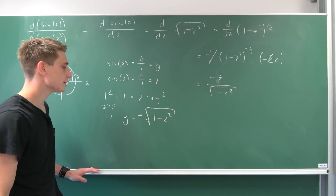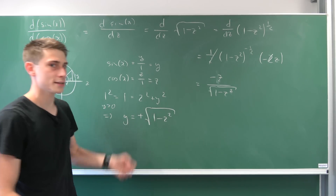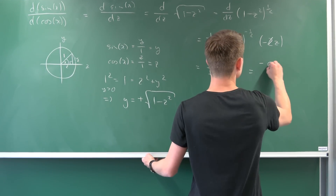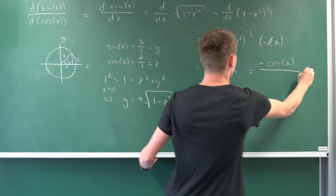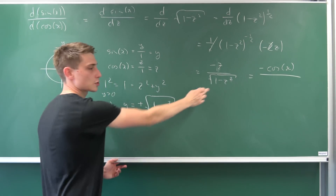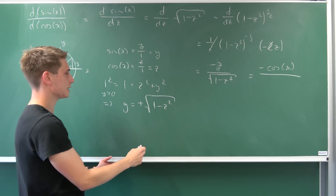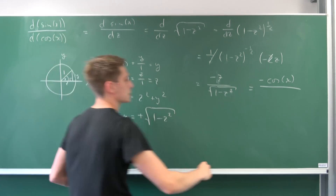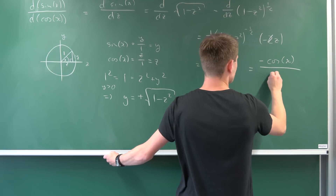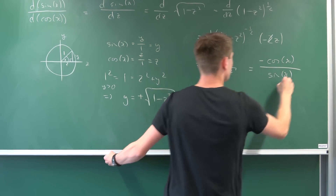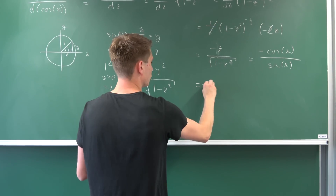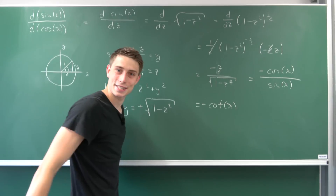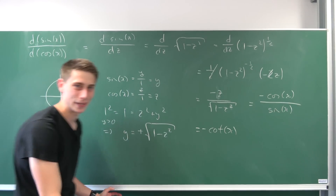And now you might notice something. We identified z as being cosine of x, so we have minus cosine of x in the numerator. And √(1 − z²) is nothing but y, and y is just sine of x. So this is sine of x in the denominator, and we end up with negative cotangent of x. And that was the second way.